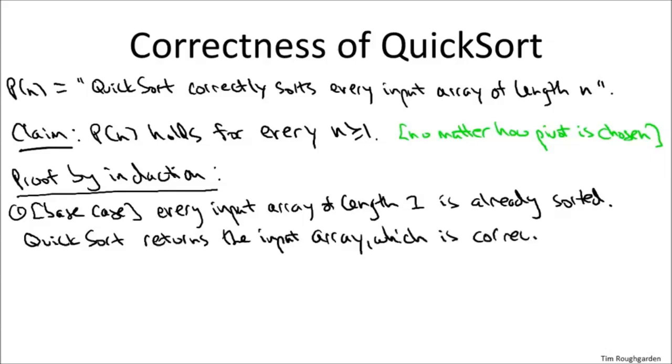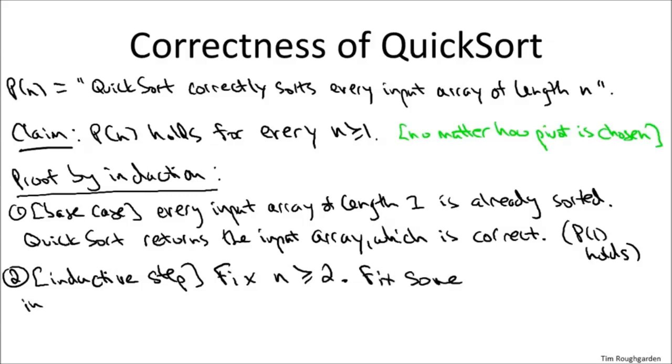So in the inductive step, we have to fix an arbitrary value of n that's at least two, a value of n not covered by the base case. So let's fix some value of n at least two. Now what are we trying to prove? We're trying to prove that QuickSort always correctly sorts every input array of length n. So we also have to fix an arbitrary such input. So let's make sure we're all clear on what it is we need to show. What are you showing in an inductive step?